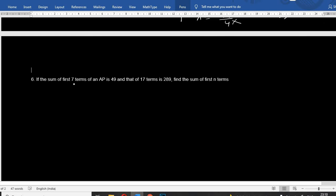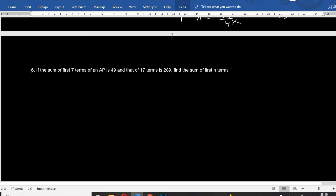Let's look at the second one. If the sum of the first seven terms of an AP is 49, and that of the first 17 terms is 289, find the sum of the first n terms.